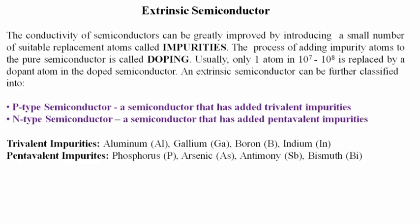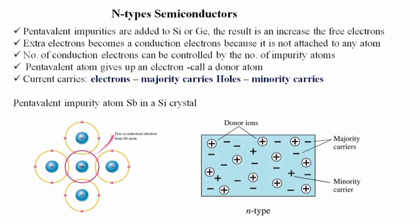In a semiconductor with added trivalent impurities such as aluminium, gallium, boron, or indium, it is called a P-type semiconductor. For N-type semiconductor, pentavalent impurities such as phosphorus, arsenic, antimony, or bismuth are added. Pentavalent atoms such as antimony or phosphorus added to silicon or germanium increase the number of free electrons. The extra electrons become conduction electrons since they are not attached to any atom. The number of conduction electrons can be controlled by the number of impurity atoms. The pentavalent atom gives up an electron, which is why they are called donor atoms. In N-type materials, electrons are majority carriers and holes are minority carriers.